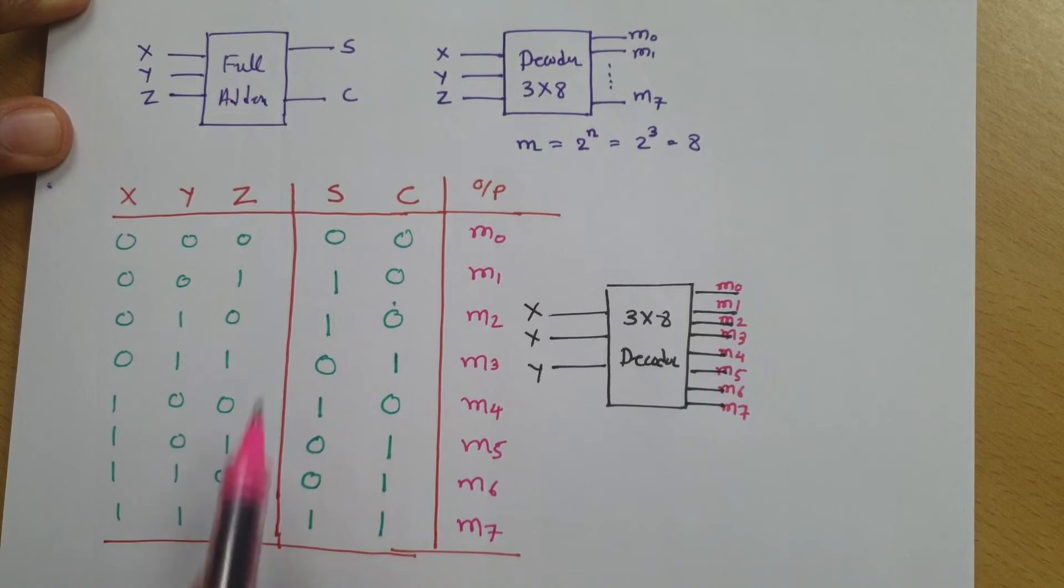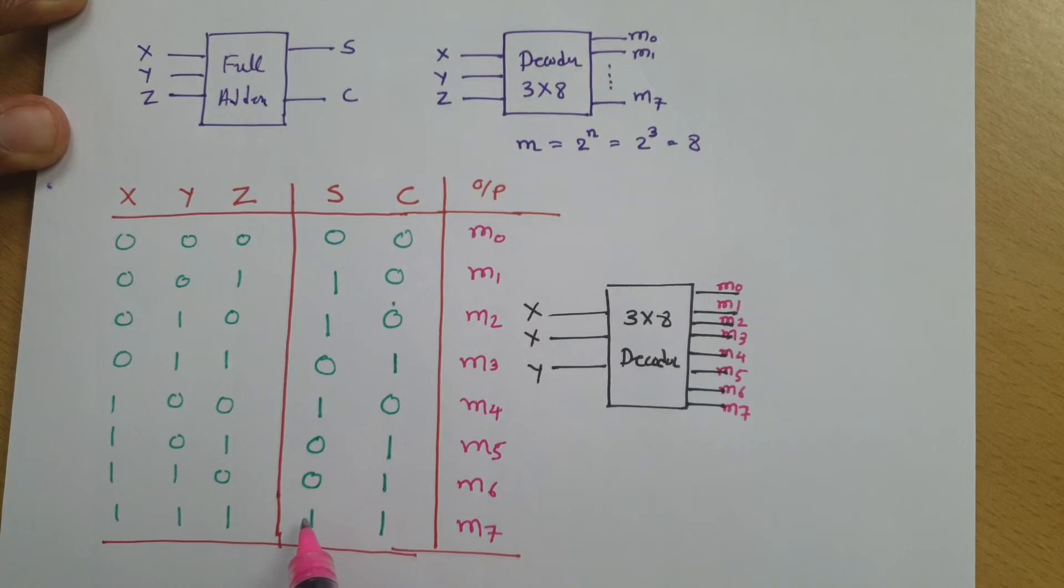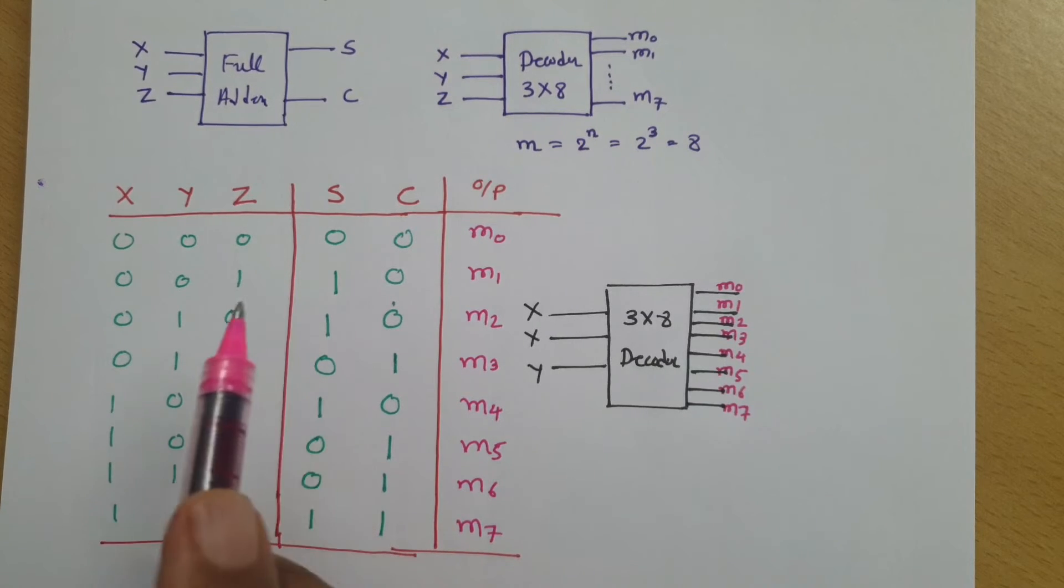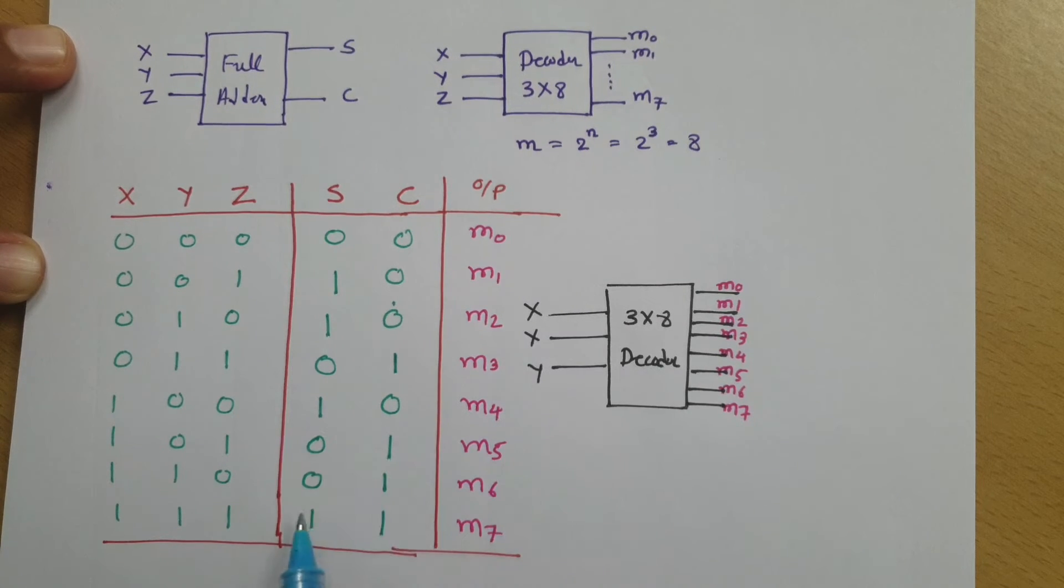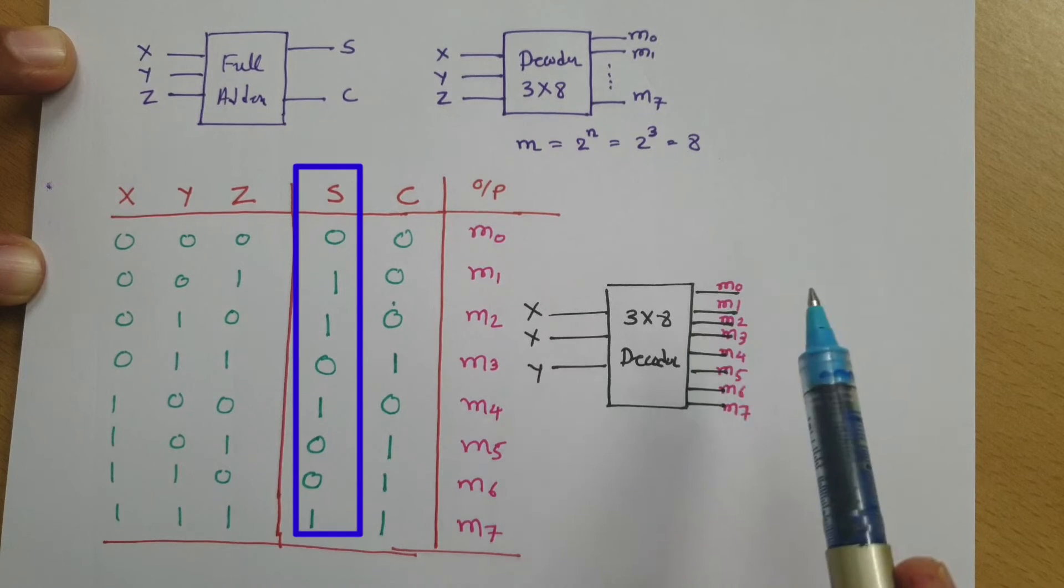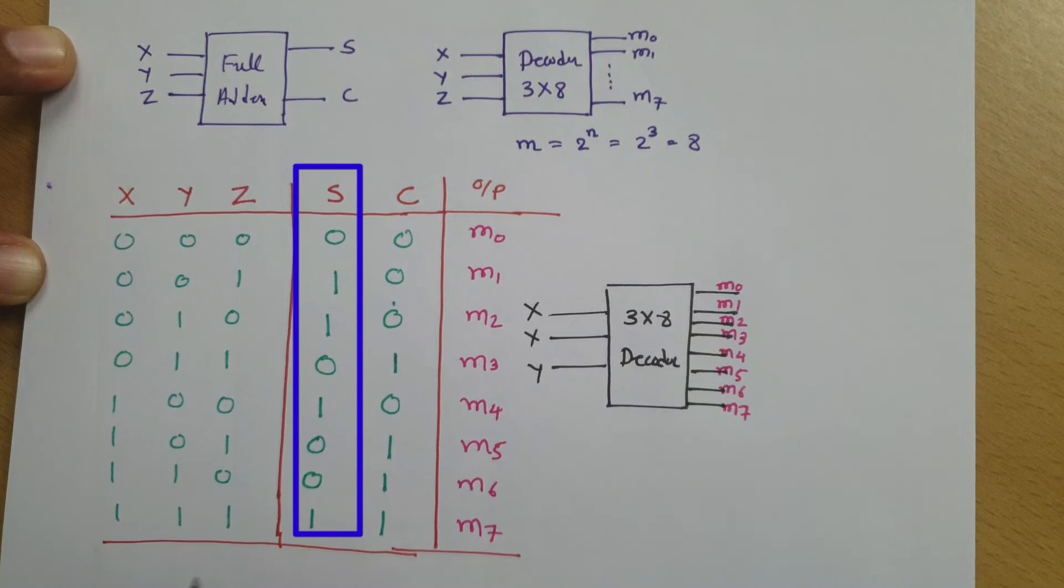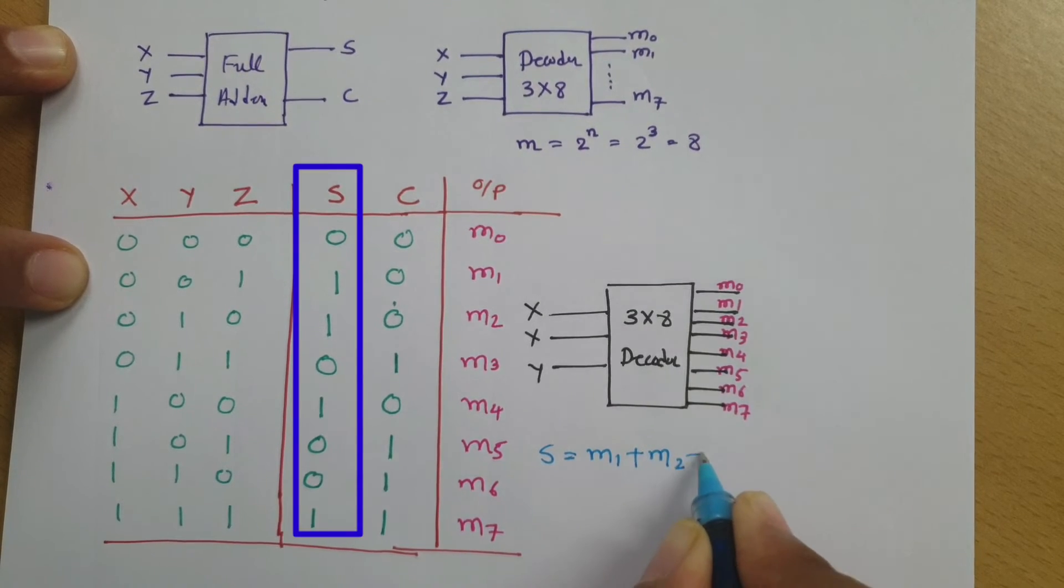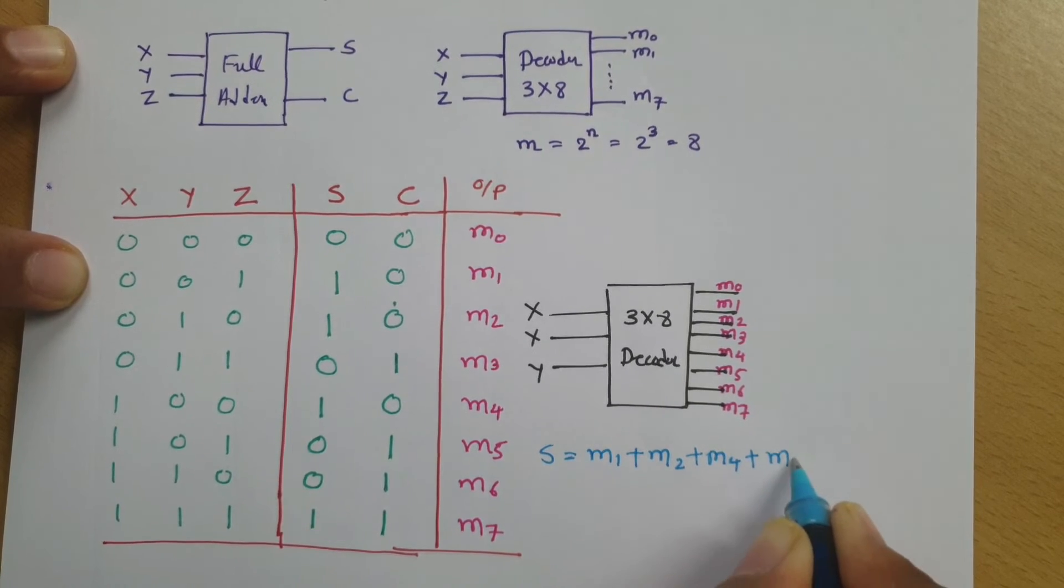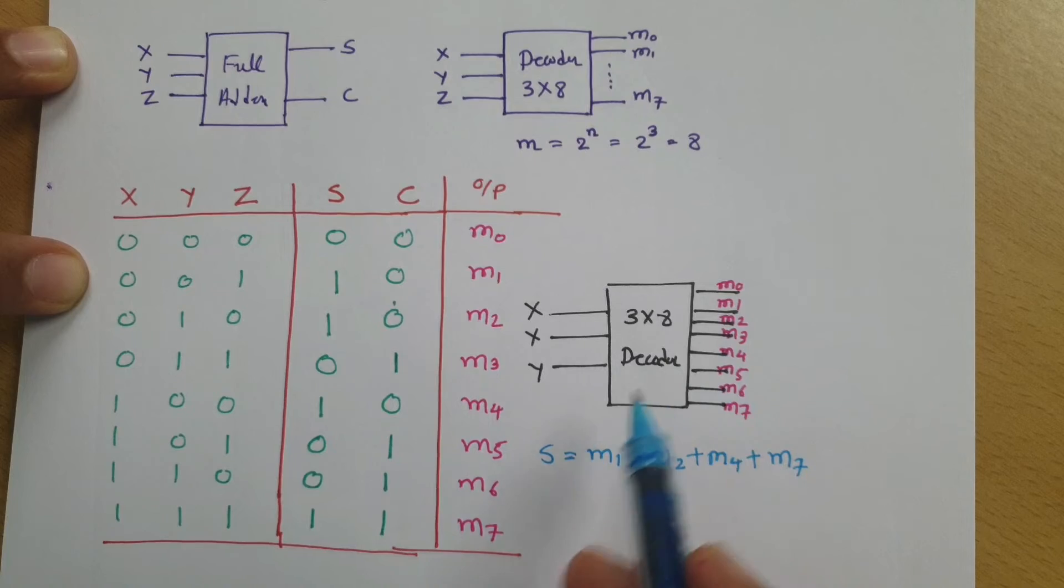Now to form sum, if you observe the locations which are 1, these are the locations where 1 is there. For sum selection, we need to have this terminal selection: M1, M2, M4, and M7. If you OR these 4 terminals, at output side you can have sum. From these ones, we can say sum equals M1 plus M2 plus M4 plus M7.